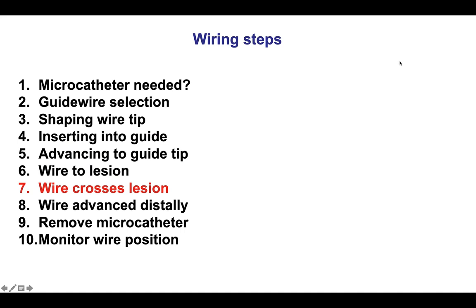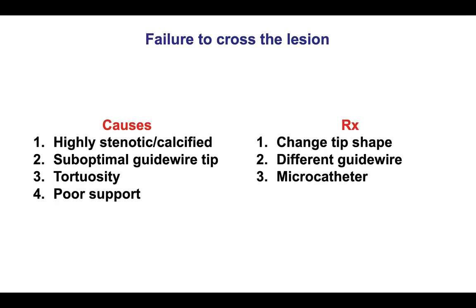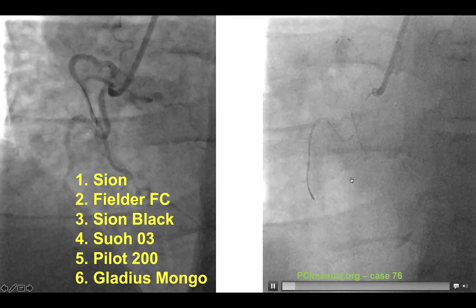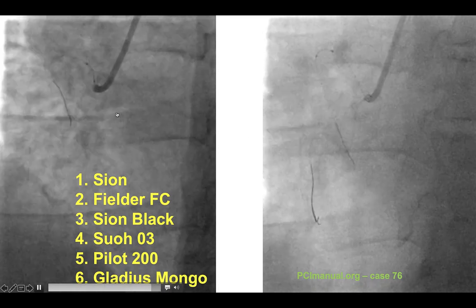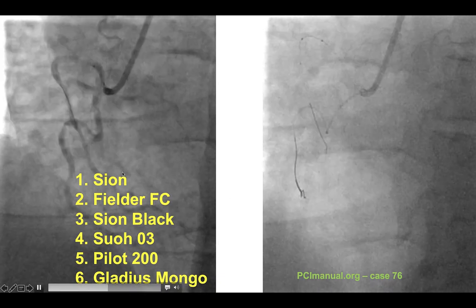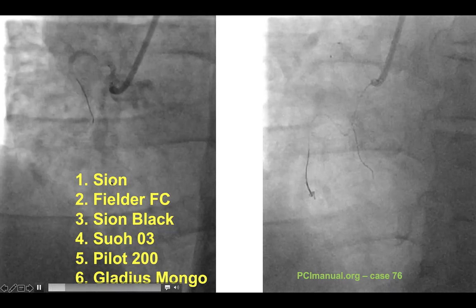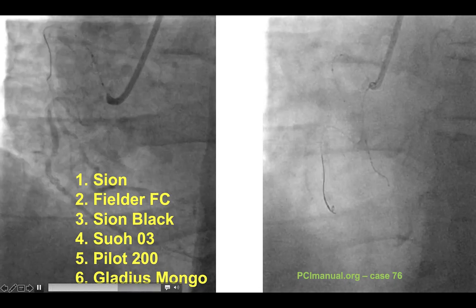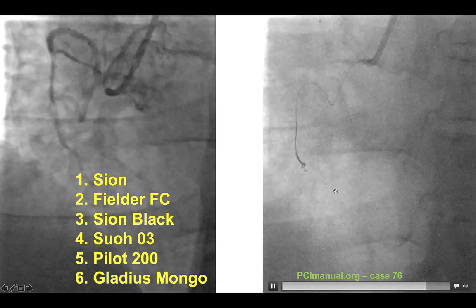Step number seven is for the wire to cross the lesion, and that can sometimes be challenging — for example, in patients with highly stenotic or calcified lesions, if the tip of the wire is deformed, or if there is tortuosity and poor support. Treatment includes changing the wire shape — best done with a microcatheter so that ground gained by the wire is not lost — and using a different guide wire. This is an example of a highly tortuous right coronary artery with a mid-RCA lesion that was extremely hard to wire, despite using a variety of guide wires including polymer-jacketed wires, soft wires, and stiff polymer-jacketed wires. Unfortunately, none of the wires could cross through the target lesion.